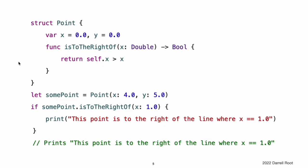The main exception to this rule occurs when a parameter name for an instance method has the same name as a property of that instance. In this situation, the parameter name takes precedence and it becomes necessary to refer to the property in a more qualified way. You use the self property to distinguish between the parameter name and the property name. Here, self disambiguates between a method parameter called x and an instance property that is also called x. Without the self prefix, Swift would assume that both uses of x refer to the method parameter called x.